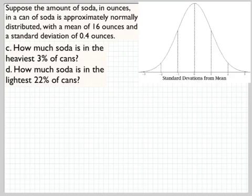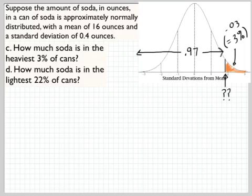So here's something new we haven't talked about yet. How much soda is in the heaviest 3% of cans? So what this is asking is you've got, up here, you've got the heaviest 3% of cans. 3% of the area is up here. And I want to know, what is this cutoff value here? What is this here? Right here. What weight gives me 3% of the cans above it?